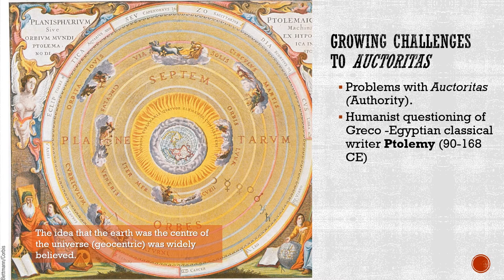Cracks began to show in these authority figures once we reached the early modern period. One of the first was Ptolemy — a Greek-Egyptian philosopher whose geographic textbooks were used across Europe. They were largely correct, identifying China and India in roughly the right places. But Ptolemy had one major error: he knew nothing of the Americas. When Columbus discovered the Americas for European audiences, Ptolemy was proven completely wrong. If he could be wrong about that, perhaps he was wrong about other things too.